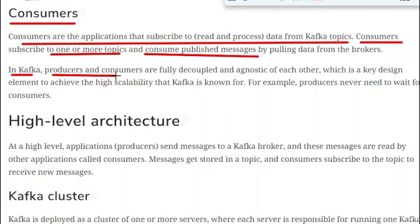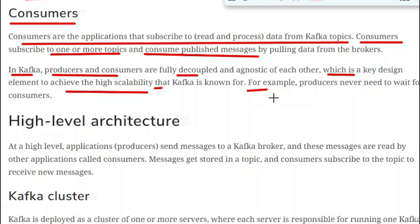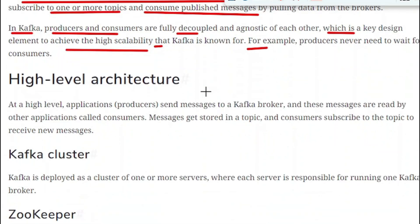In Kafka, the producer and the consumer are fully decoupled and agnostic of each other, which is the key design element to achieve the high scalability that Kafka is known for. Because they are not tightly coupled, we can achieve high scalability as needed. For example, a producer never needs to wait for the consumer. If a producer wants to send messages but the consumer is unavailable, that is perfectly fine — the producer sends to the Kafka broker, which stores the messages until the consumer comes back online.